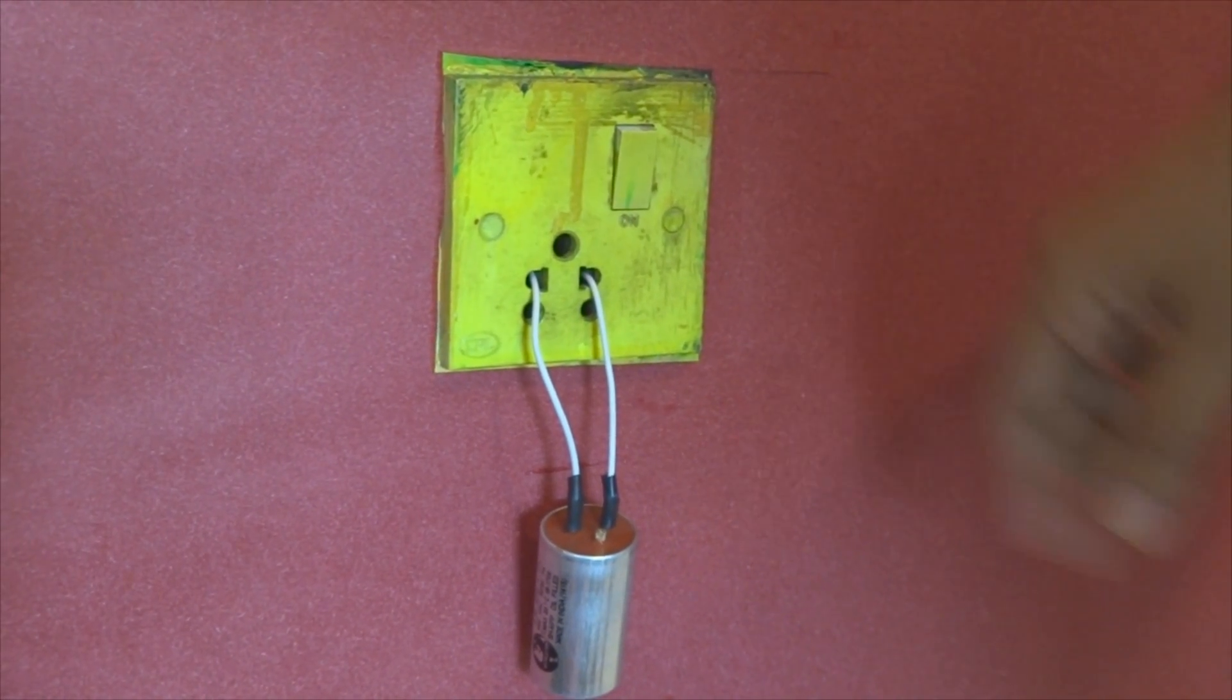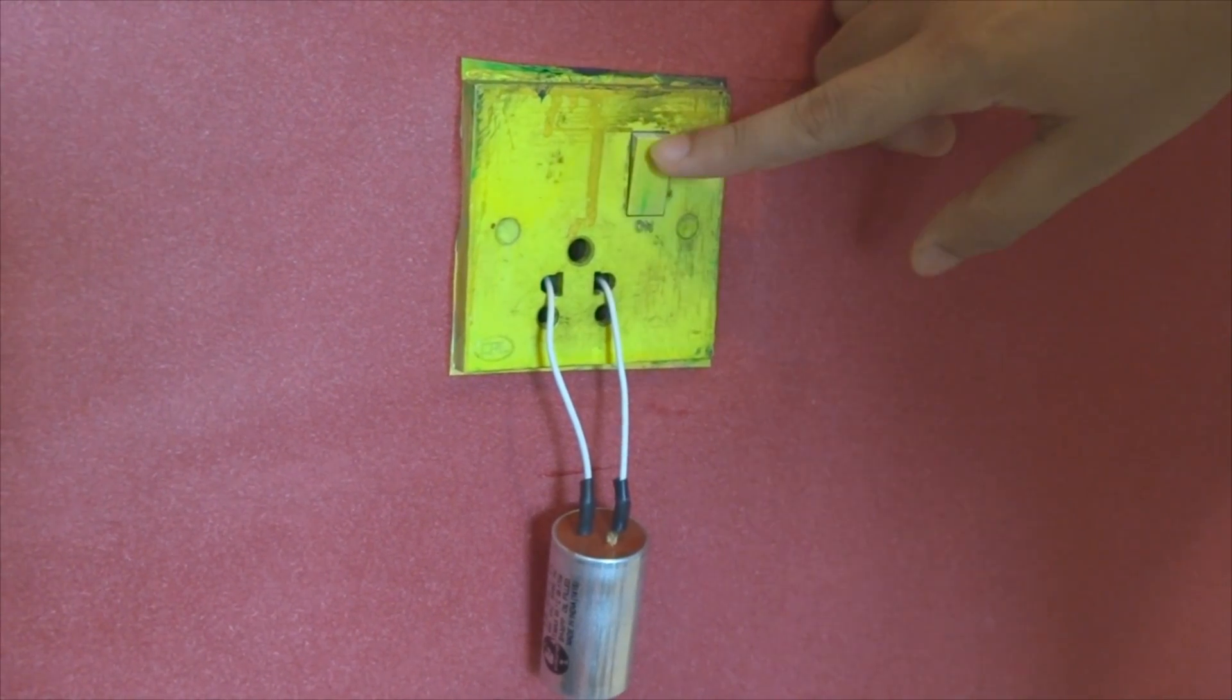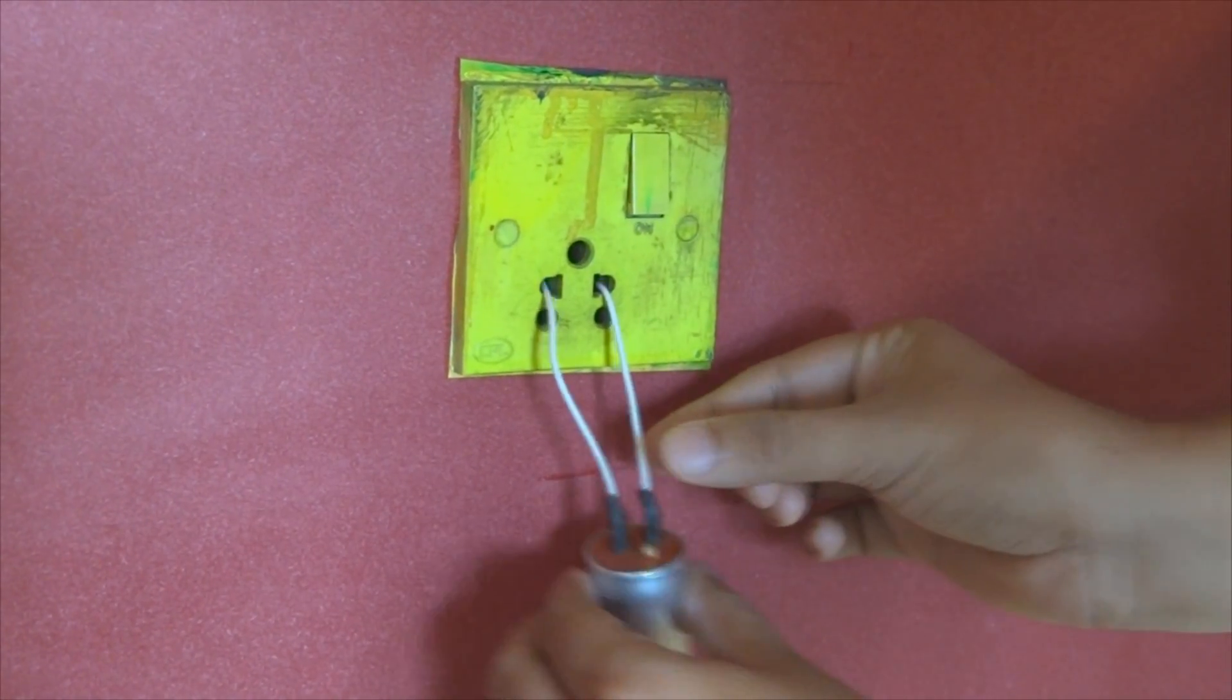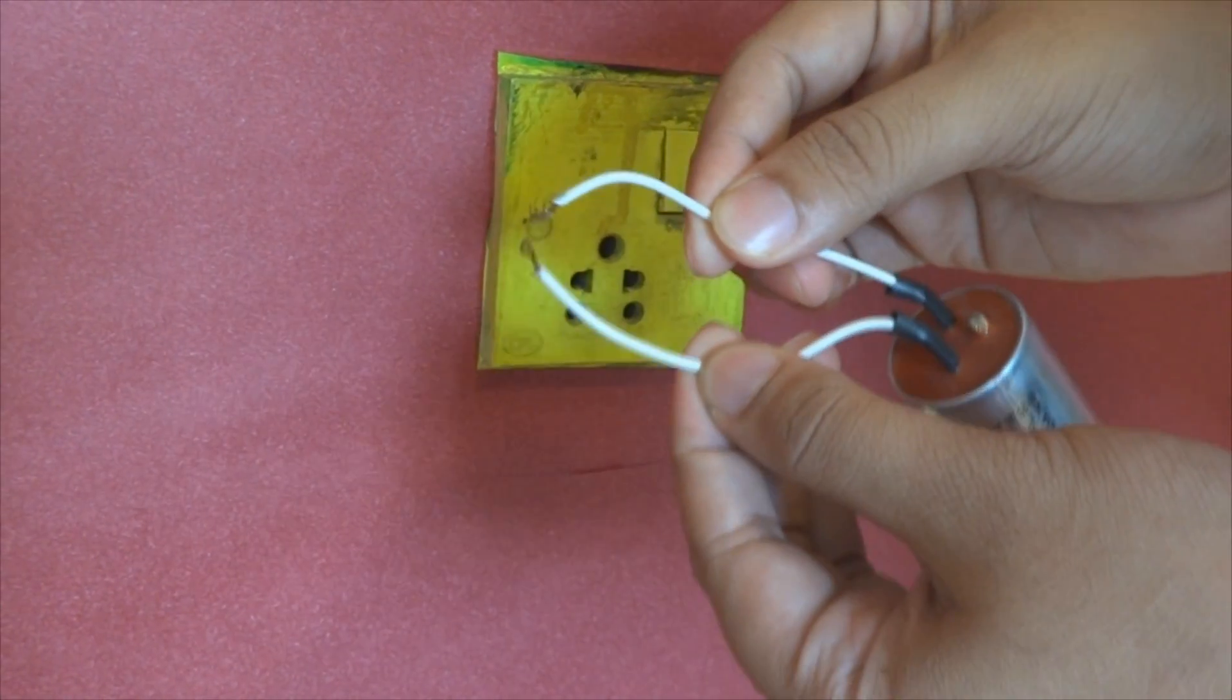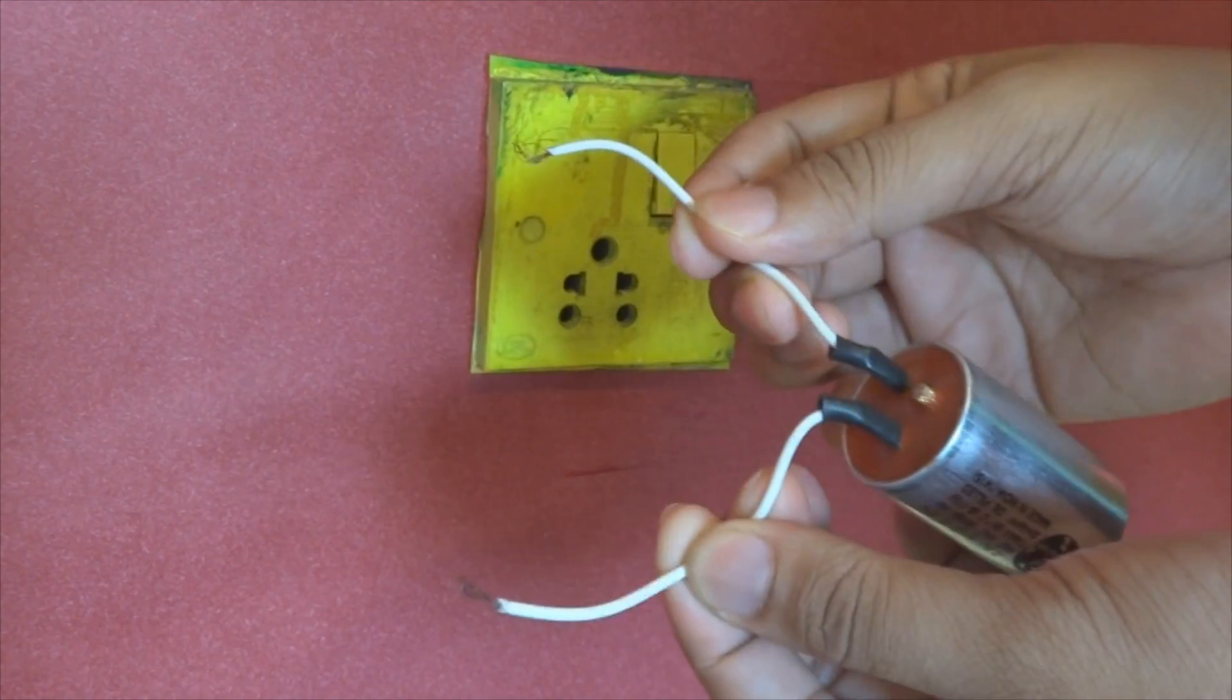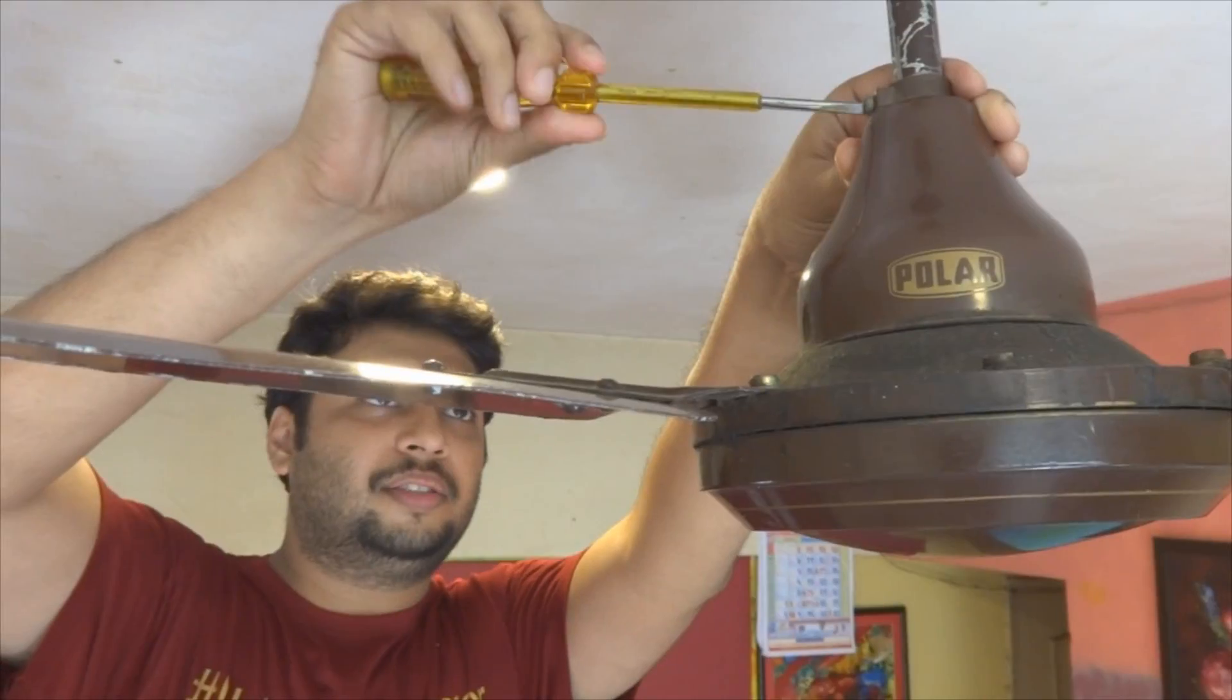But how can you check it if you don't have a multimeter? This is the way. Plug in the capacitor in a socket this way and turn on the switch. Wait for a few seconds, turn it off, remove the capacitor and bring both the wires of the capacitor in contact. If there is a spark, that means the capacitor is good to go and you can replace it with your existing non-functional one.